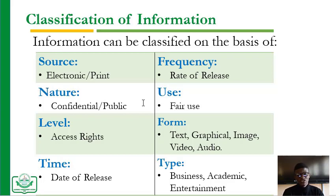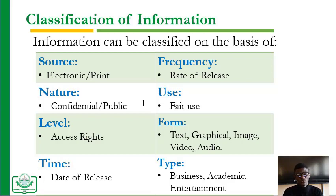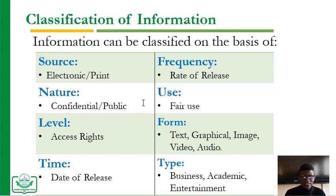The next classification is frequency — the rate of release. For example, in a class you have a timetable, which is a rate of release: your lectures are scheduled at particular points in time, spread across a week or module. Next is use — when accessing information, consider whether it is fair use. Then there is form: in what form is the information? Is it text, a graphical image, video, audio, and so on?